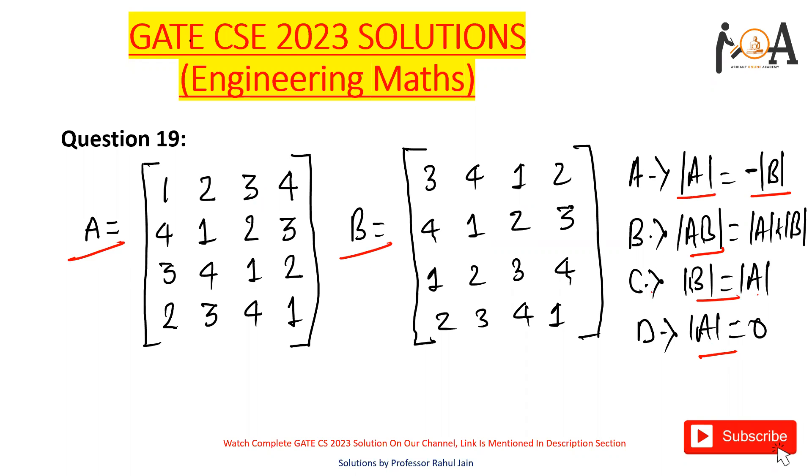Out of these four options, which is correct? If you see these matrices, it's a very easy kind of question they have asked from engineering mathematics in GATE CSE 2023. You only need to know the basic concepts. If you have basic concepts, definitely you can solve within just seconds.